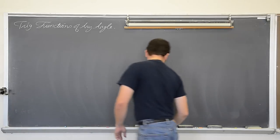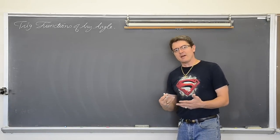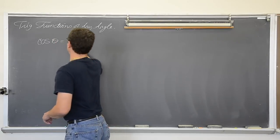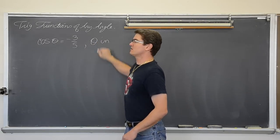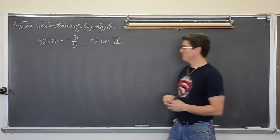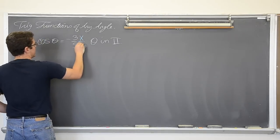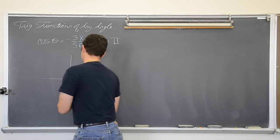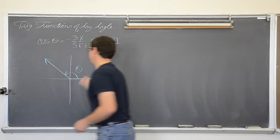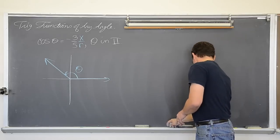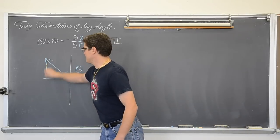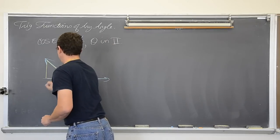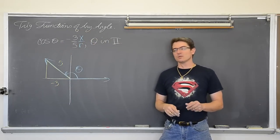Now I want to go from cosine of theta, given that value, and find all the other trig functions. So I am going to say that the cosine of theta is equal to negative three-fifths and that angle theta is in quadrant two. When I am given cosine, I am given an x and an r value — two sides of the right triangle — and it is in quadrant two. There is a rough angle in quadrant two. The reference triangle is always drawn against the x-axis. Cosine is x over r, so negative three and five — putting that negative sign there as a placeholder so I don't forget it later.